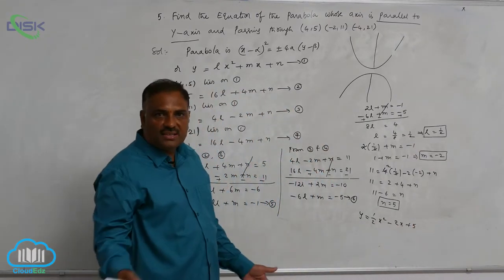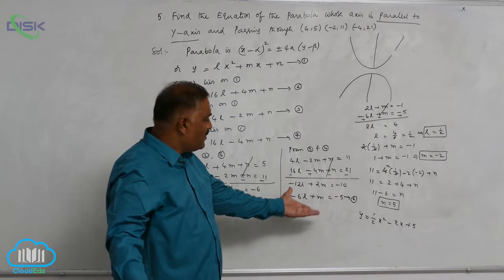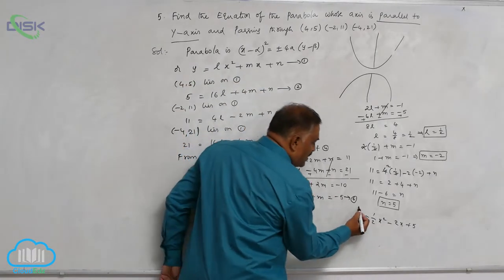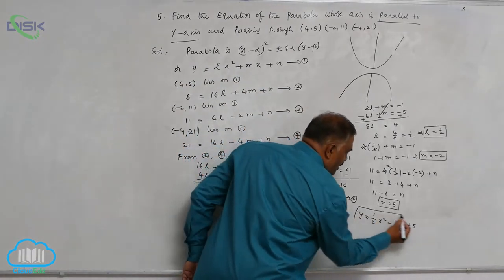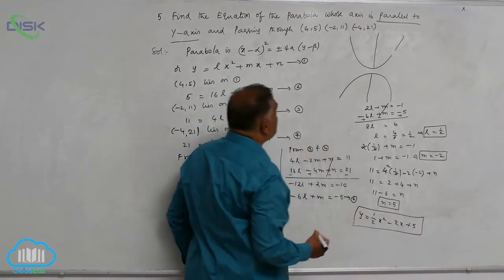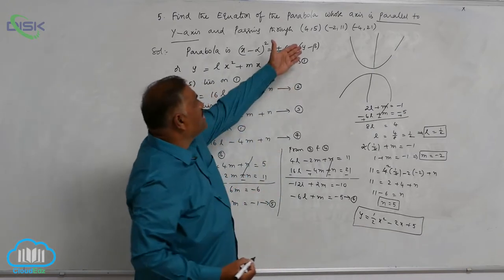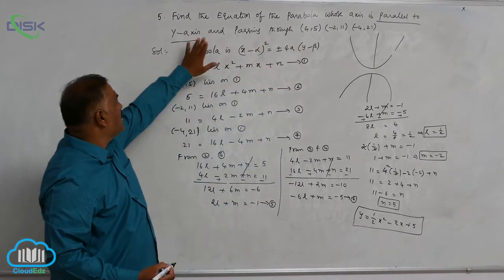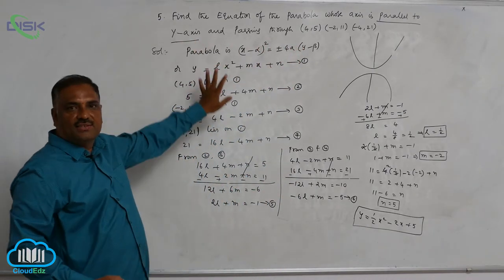If you want you can take LCM, otherwise leave it as it is. So this is the required parabola passing through the three given points whose axis is parallel to the Y axis.